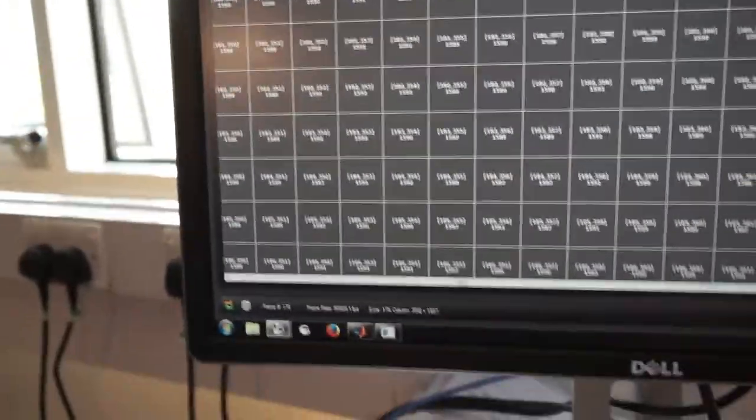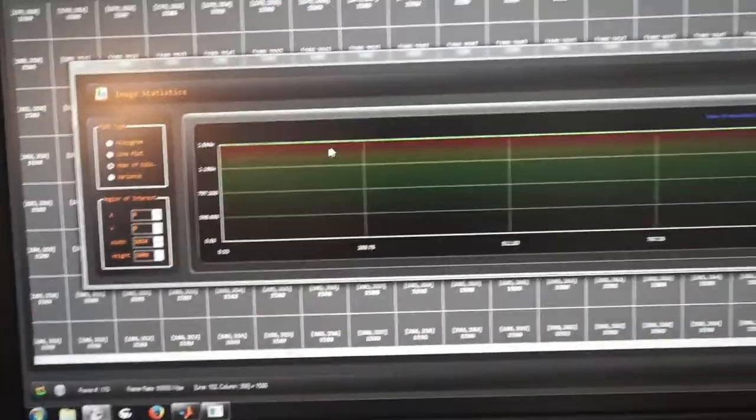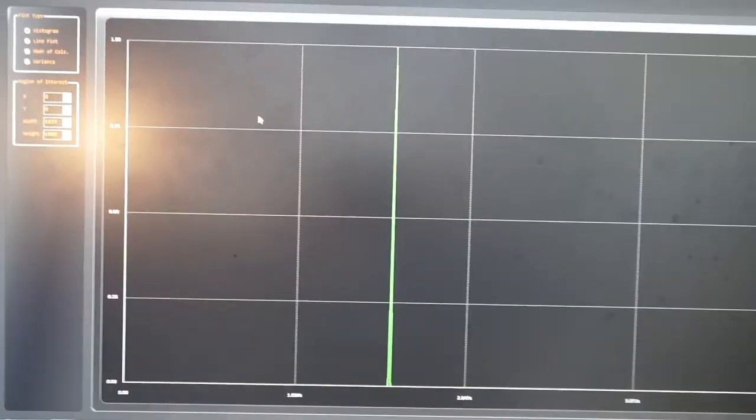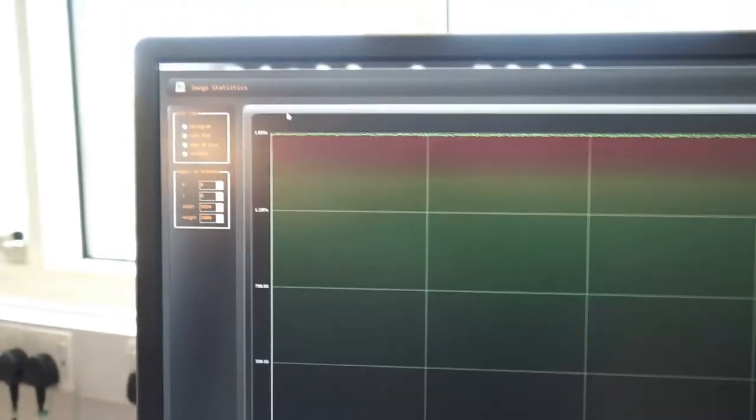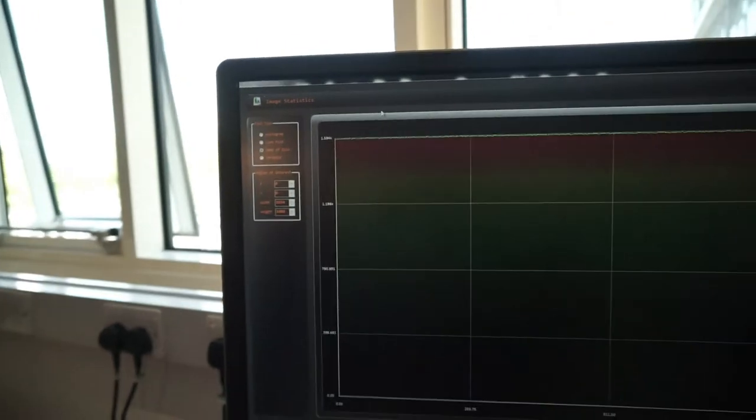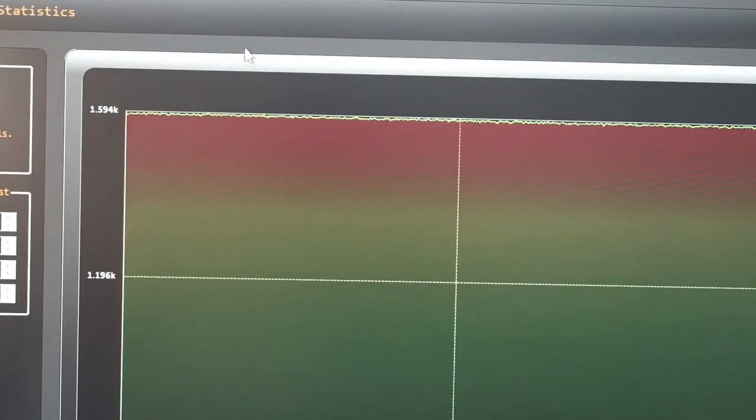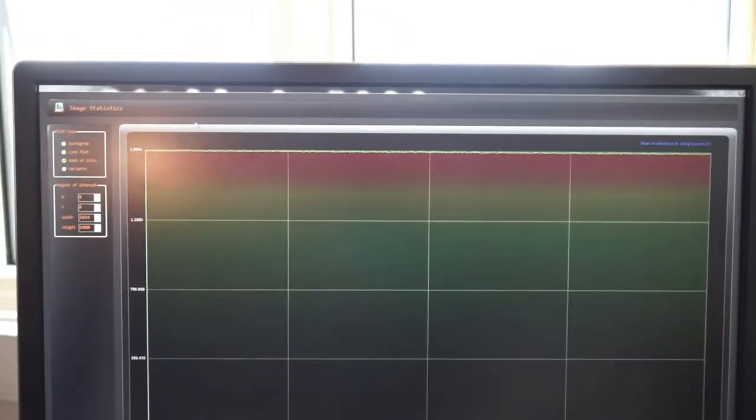What we can also do is plot some statistics so we can analyze column FPN. If I open the statistics window, I can plot a histogram of the signal, which is about 1500 digital numbers at the moment. This is probably not very meaningful. We can plot a live line plot of the converted lines. At the moment, for all 1024 ADCs, you might notice there is no kind of banding or offset between the ADC groups.